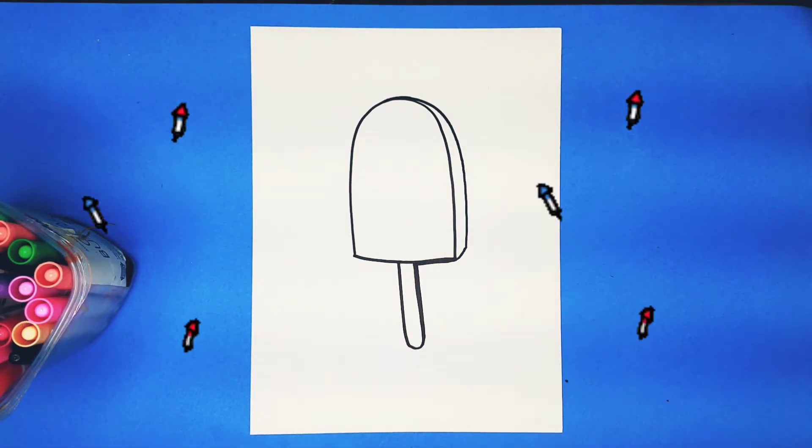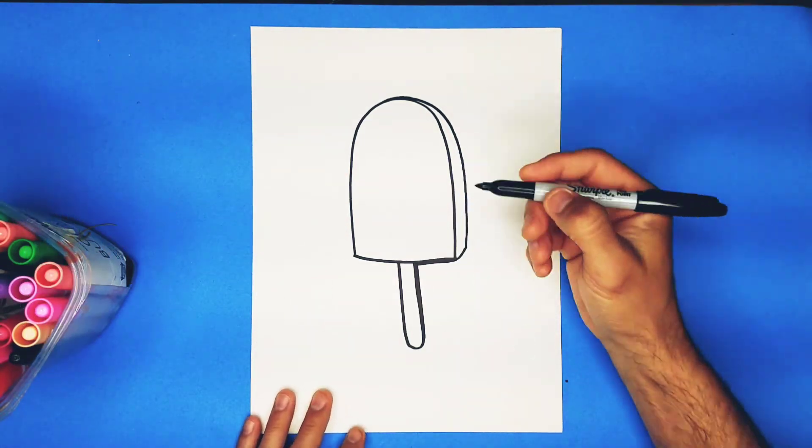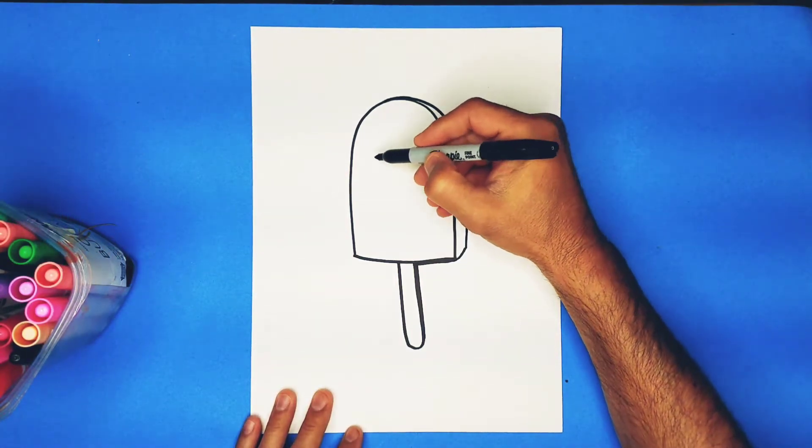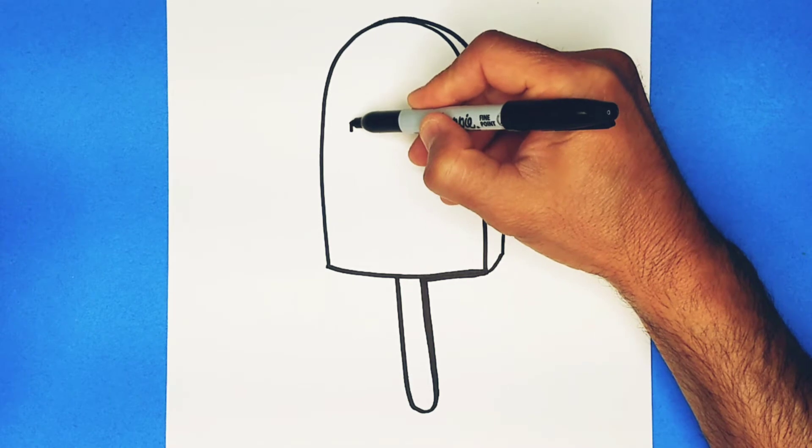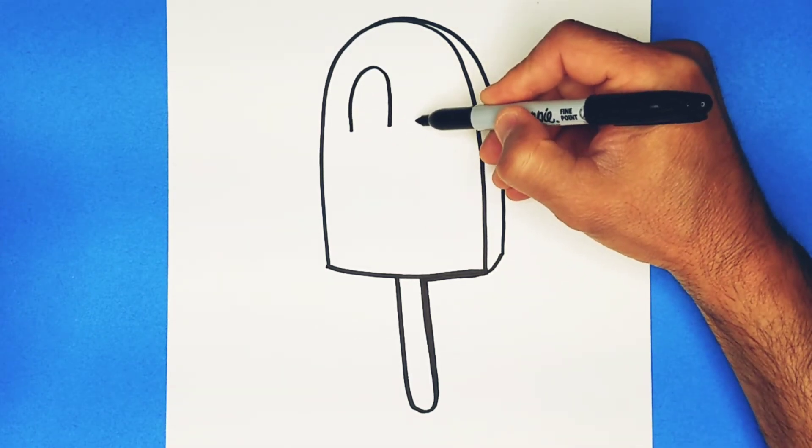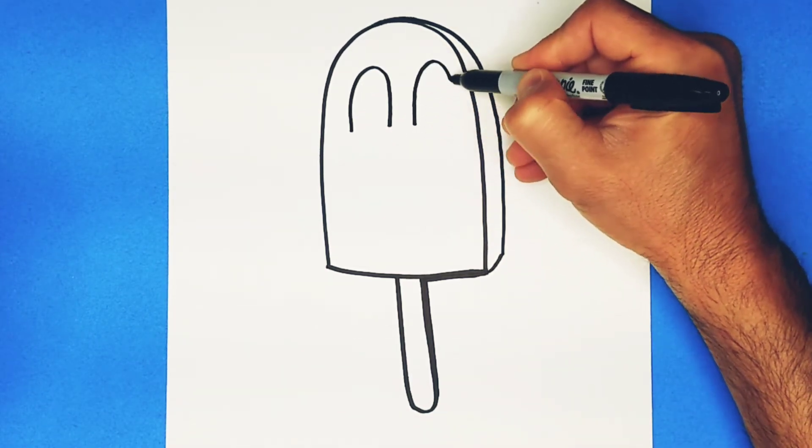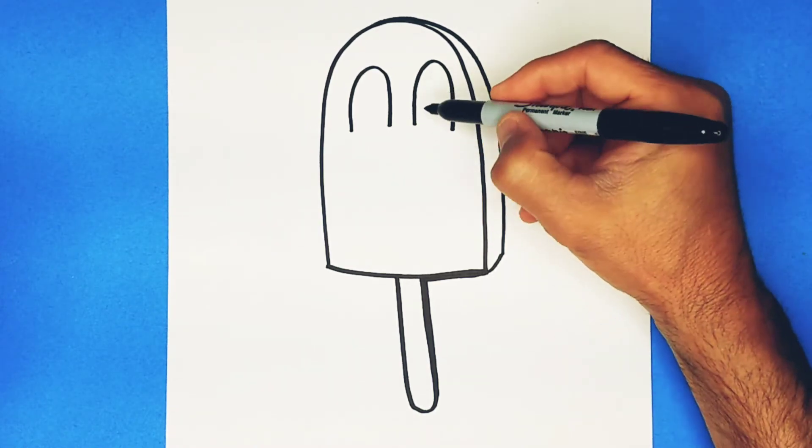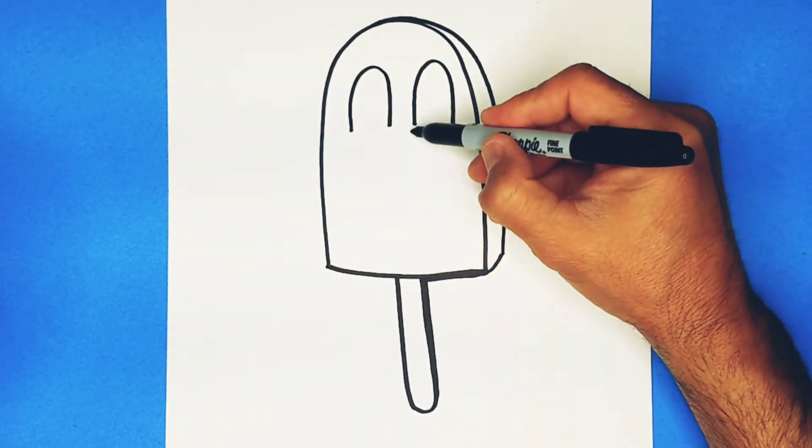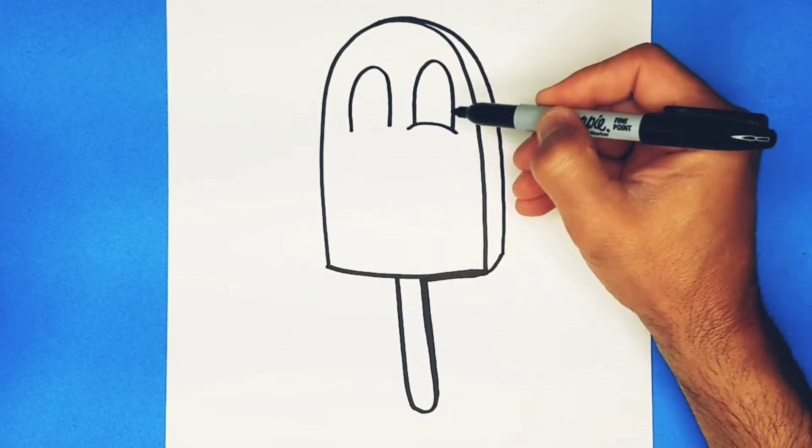Now Ice Cream Pop Girl has two eyes. She has one big eye over here and one big eye over here. Notice they're the same type of shape as the body. Put a curve on the bottom and a curve on the bottom.